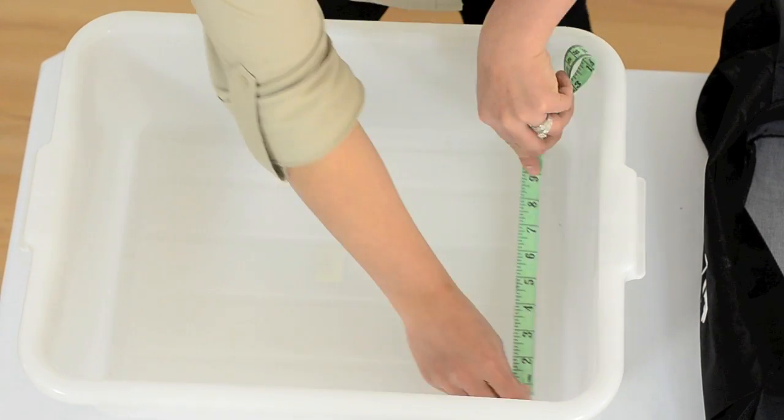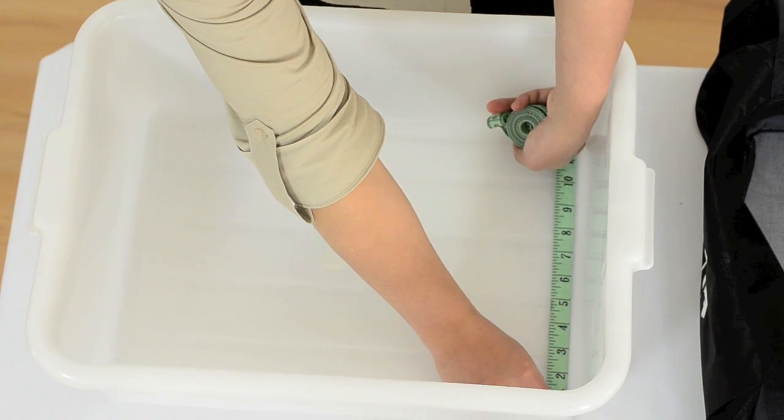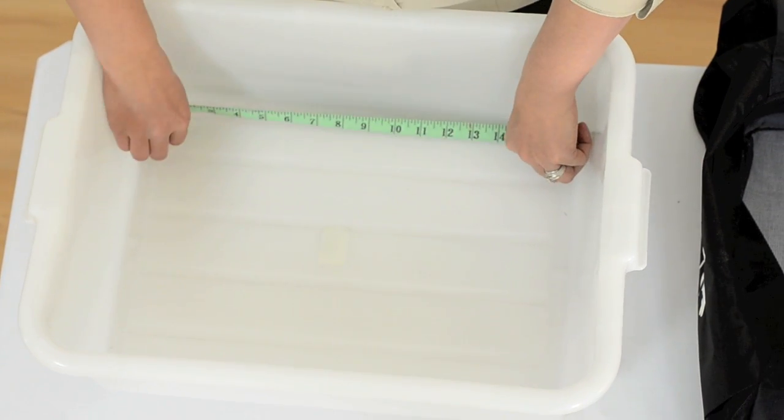For inside, you will measure corner to corner for the width and corner to corner for the length. And for the height, you're going to go top to bottom.